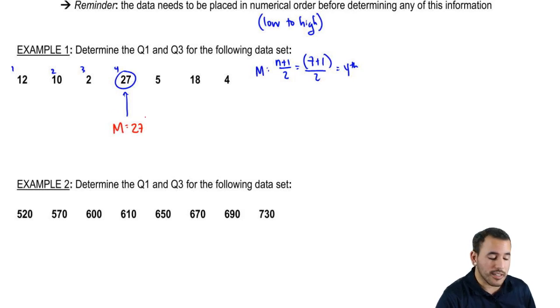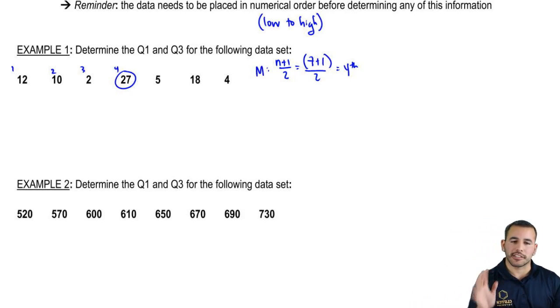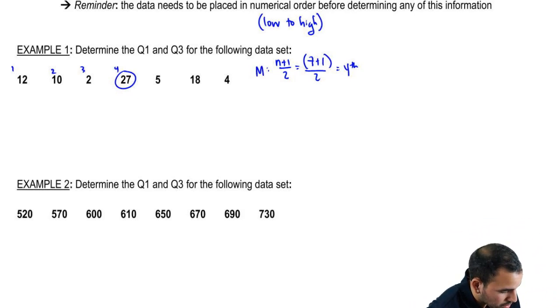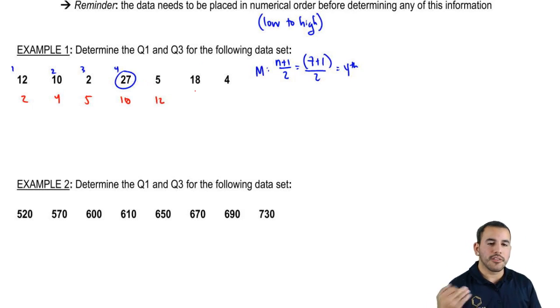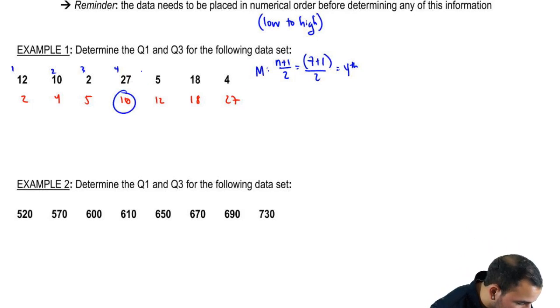Remember that we have to put our data in order. That was just to make sure you guys are paying attention. Always step number one when doing the median - you have to make sure your data is in order. So let's start: 2, 4, 5, 10, 12, 18, and 27. Now the fourth observation is the median. So not 27, but 10 rather. The median is 10.